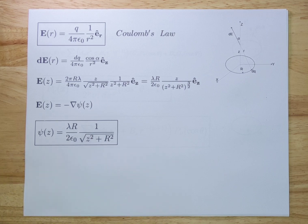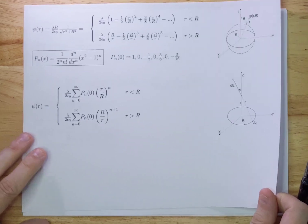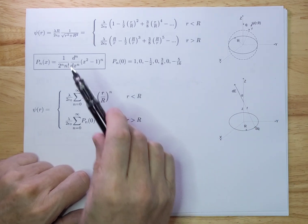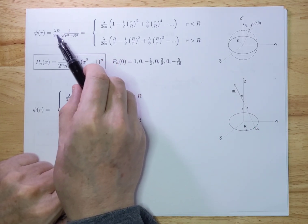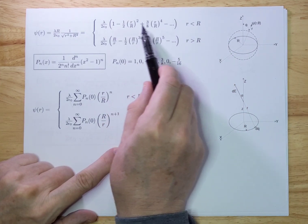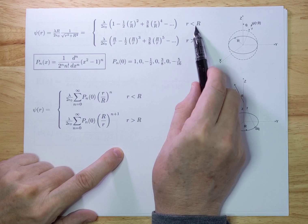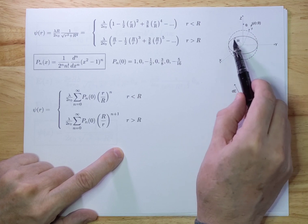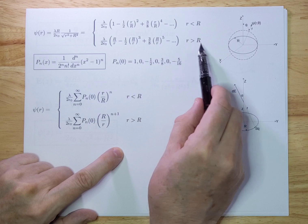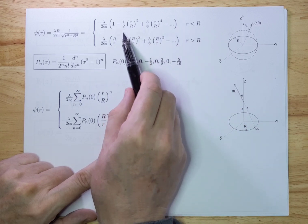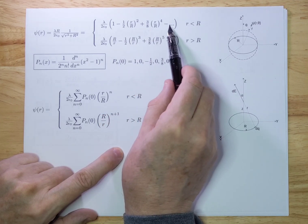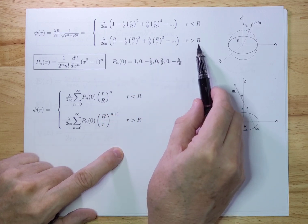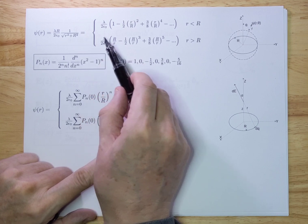Now the task is to rewrite this potential into a form reminiscent of the generic Laplace solution. We do that by splitting the function into two pieces: we perform a Taylor expansion when small r is less than big R — that's inside the sphere — and we do an expansion outside the sphere. If you do that, you get two solutions. This is a Taylor expansion around zero, and the other is a Taylor expansion around infinity. You can do this in Mathematica or by hand.